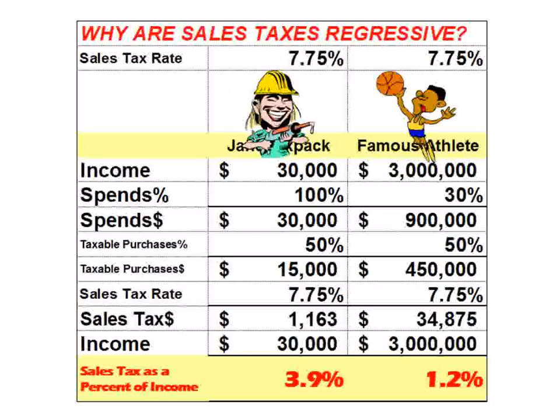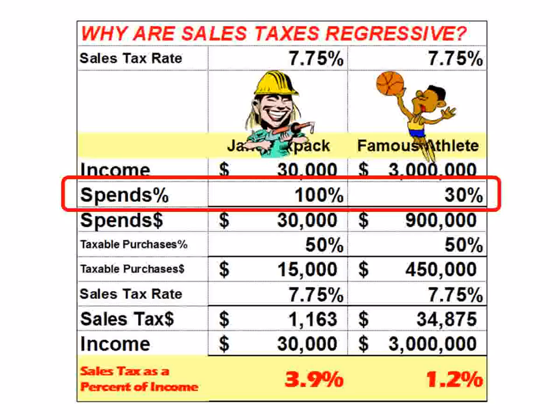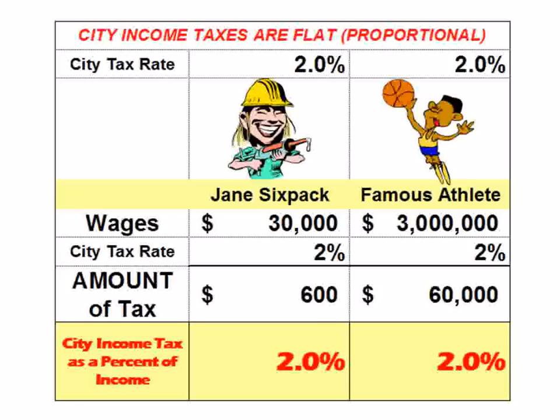Then I move on to why sales taxes are effectively regressive — regressive below the surface. Jane makes thirty thousand and spends it all; half of that I assume is on taxable purchases. She spends all of her income, but he doesn't. That's the critical distinction. At the cash register, both pay 7.75%, but because she spends it all and he doesn't, as a percent of her income sales taxes are 3.9%, while for him it's only 1.2% of his income. You can't pay sales tax on money you don't spend — that's why sales taxes are effectively regressive.